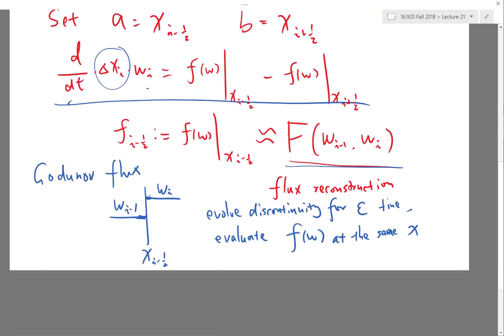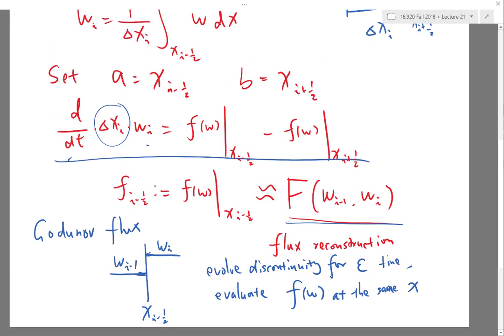The reason the Godunov scheme is only first-order is how we reconstructed the left and right state that fits into the Godunov function. We treated the solution as if it is piecewise constant in every control volume.